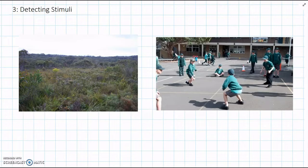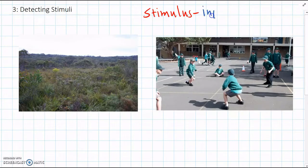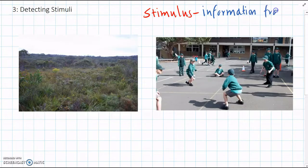And in every environment, there are lots of stimuli. So a stimulus is just any information from the environment that can be sensed by the body. Information from the environment.